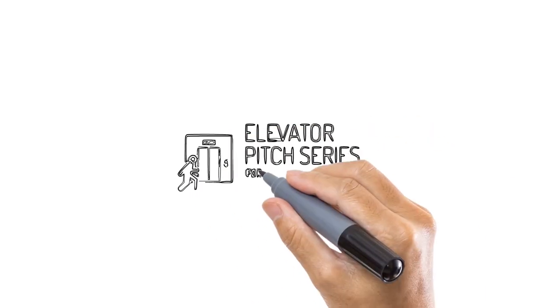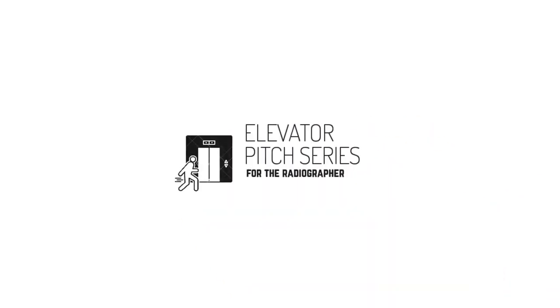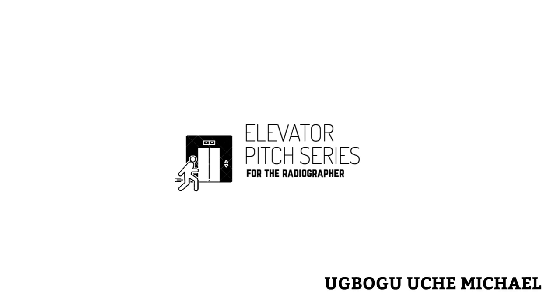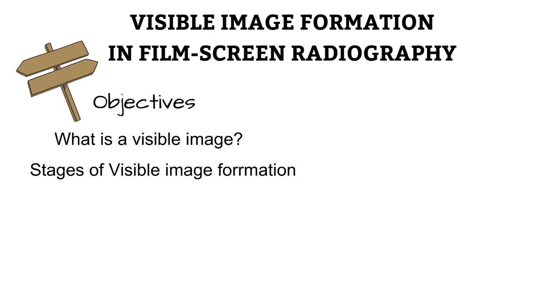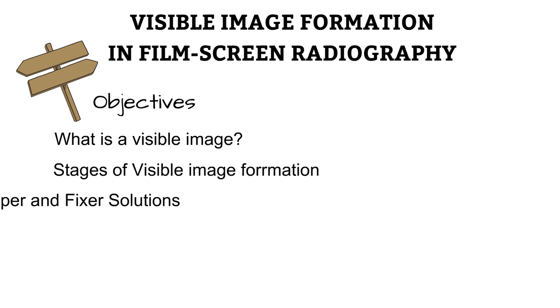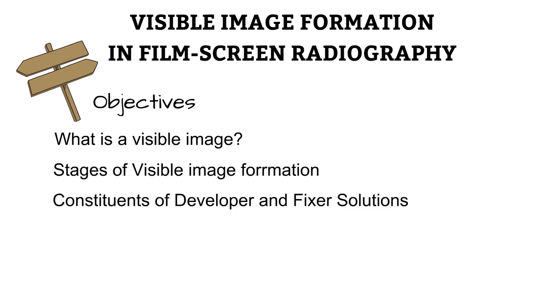Hello, and welcome to Elevator Pitch Series for the Radiographer. I am Michael, and this is the seventh video in the series on Radiographic Imaging. We'll be picking up from where we left off in the last video. This time, we'll be looking at the process of visible image formation in film screen radiography — what a visible image is, the stages in visible image formation, and the various constituents of developer and fixer solutions.